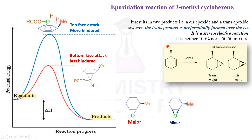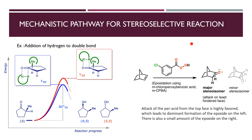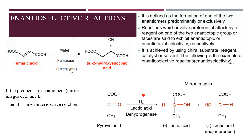It is a stereoselective reaction — it is neither 100% nor 50-50. A similar example can be given for the reduction reaction with aluminum hydride. If you attack from the same side as the methyl group, there is more steric hindrance and higher energy. When it attacks from the opposite side, there is less steric hindrance and lower energy. So one product is major and one is minor — all these factors decide the stereoselectivity.